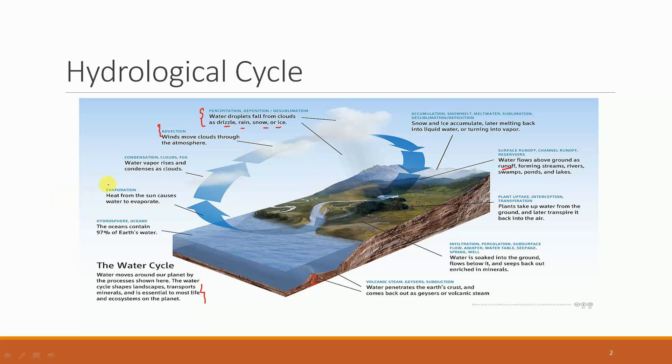Three major events of the hydrological cycle are first and foremost evaporation. The second important step is precipitation and the third important step is the surface runoff.